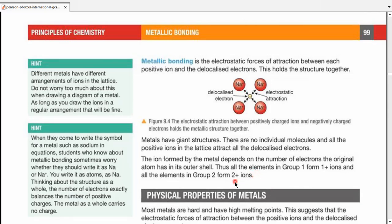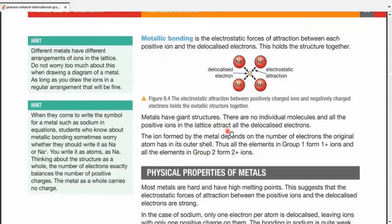But for a bit of learning, let's go with some more information. Metallic bonding is actually the electrostatic forces of attraction between the positive ions and the delocalized electrons. This holds the structure together. Now, metals have giant structures, no individual molecules.